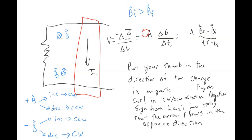More generally, instead of putting your thumb in the direction of the change in the magnetic field, you put your thumb in the direction of the change in magnetic flux. Going back to our original example: the magnetic field was out of the screen, the bar is moving so the area increases, and the magnetic flux is positive and increasing. The change in magnetic flux is positive, so fingers curl counterclockwise, but the negative from Lenz's Law tells you the current flows clockwise — which matches the answer we got previously.